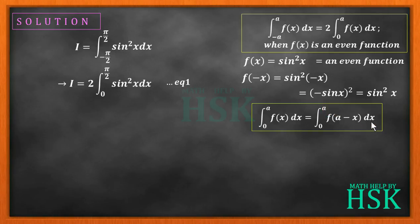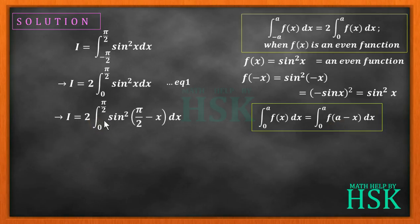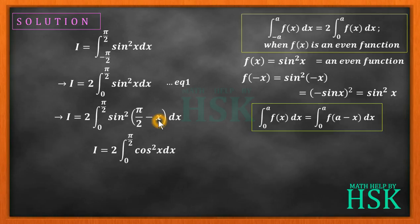This property is universal and can be applied to any function whenever it works. Applying this property, I can write the integral as twice the integral of sin²(pi/2 − x) dx from 0 to pi/2, which becomes cos²x, because sin(90° − θ) = cos θ. So I get twice the integral of cos²x dx from 0 to pi/2. I mark this as equation number two.